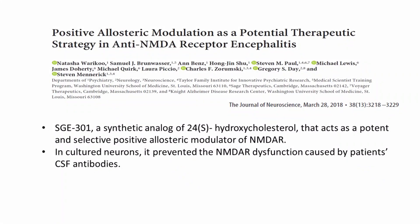Keeping this in mind, we explored the possibility of positive allosteric modulators of the NMDAR receptors as a potential treatment for NMDAR receptor encephalitis. In particular, we paid attention to SAGE 301, a synthetic analogue of 24-hydroxycholesterol that acts as a potent and selective positive allosteric modulator of NMDAR receptors.